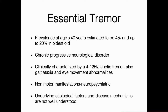Essential tremor is one of the most common movement disorders, with a prevalence at age greater than 40 years estimated to be 4%, and up to 20% in the oldest old. It is a chronic progressive neurological disorder, clinically characterized by the presence of a kinetic tremor in the hands or arms, which can progress to become more severe and affect other body regions, including the upper trunk and the head. Non-motor manifestations can also include neuropsychiatric manifestations such as depression, anxiety, and cognitive decline.